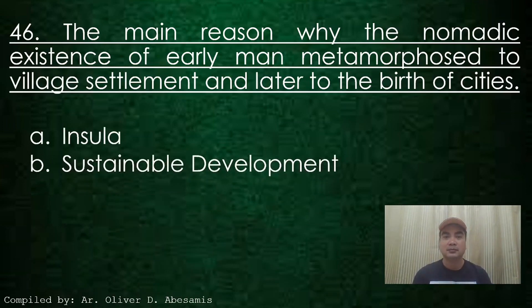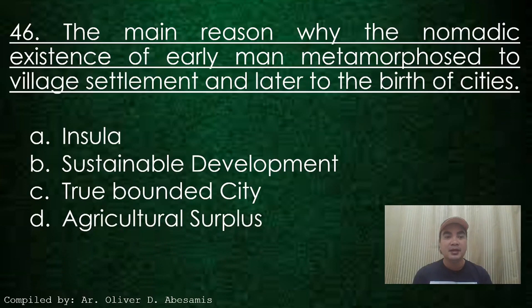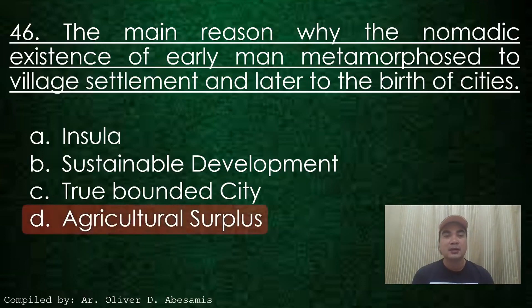Next question. Options: A. Insula, B. Sustainable development, C. True bonded city, D. Agricultural surplus. Answer: D. Agricultural surplus.